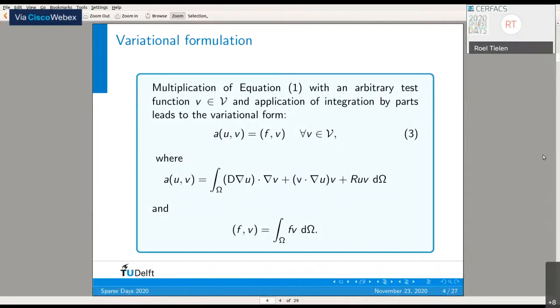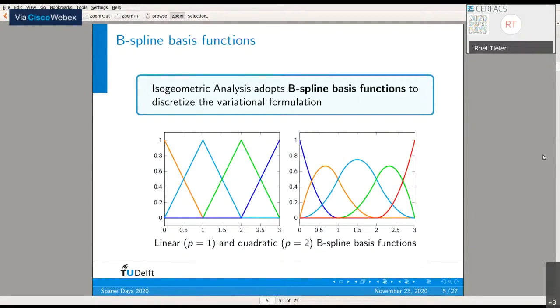The key idea is that we use B-spline basis functions to discretize this variational formulation. It's important to notice that B-spline basis functions can be defined for arbitrary approximation orders. For example, for P equals 1, we obtain linear B-spline basis functions, which are basically the piecewise continuous hat functions that probably everyone knows from standard finite elements.